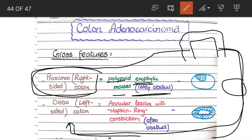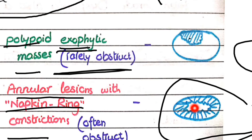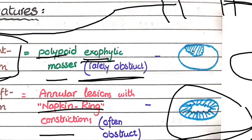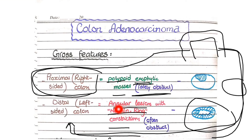In contrast, tumors of the left-sided colon are annular lesions. Annular means ring-like, so they don't involve only a small part of the circumference — rather, they occupy the whole circumference, the full 360 degrees. You can see in this diagram how the tumor appears as an annular lesion with napkin ring constrictions, causing constriction of the lumen.